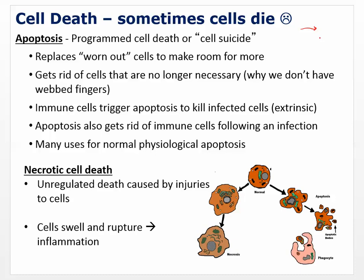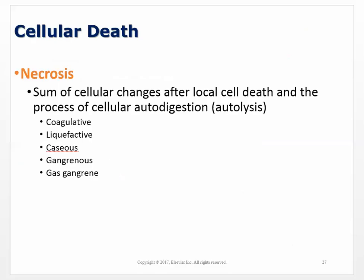Immune cells trigger apoptosis to kill infected cells, and apoptosis also gets rid of immune cells following an infection. There are many uses for normal physiologic apoptosis — it isn't necessarily a bad thing. Necrotic cell death, however, is almost always a bad thing: unregulated death caused by injuries to cells. The cells may swell — we've talked about how that happens — rupture, and then trigger inflammation.